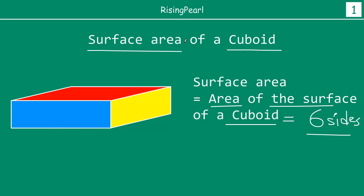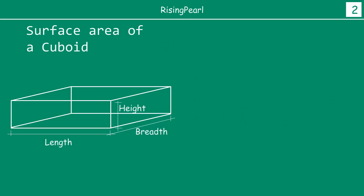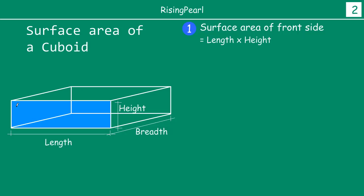When we say surface area of a cuboid, we mean the sum total of all six surfaces. We measure each of the six areas and add them to get the total surface area. Now let's look at how we find them. Here we have the same cuboid with length, height, and breadth labeled. The front side is a rectangle whose two dimensions are length and height, so the area of this blue rectangle is length times height.